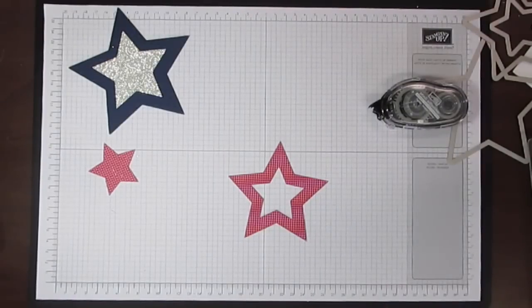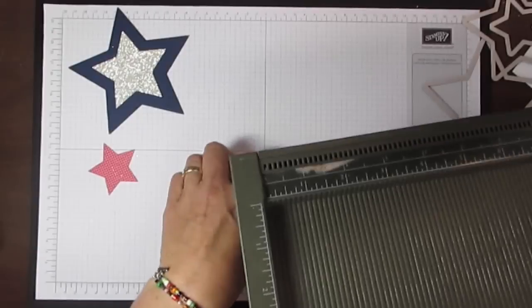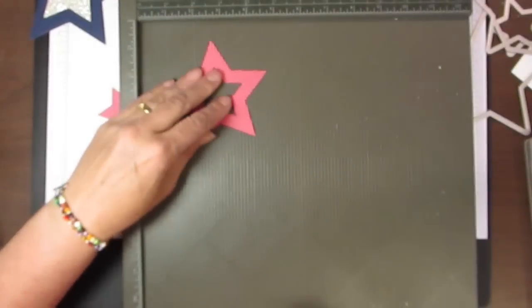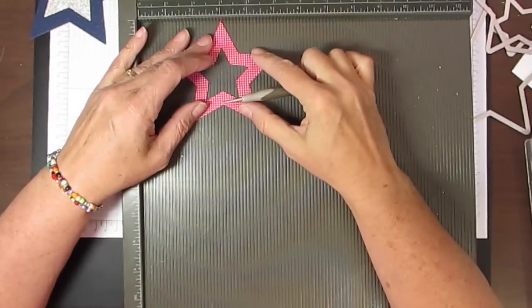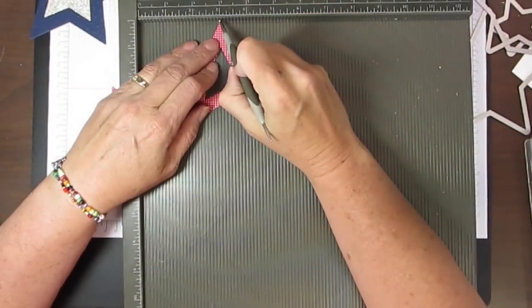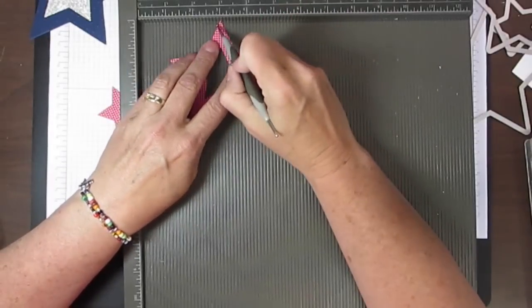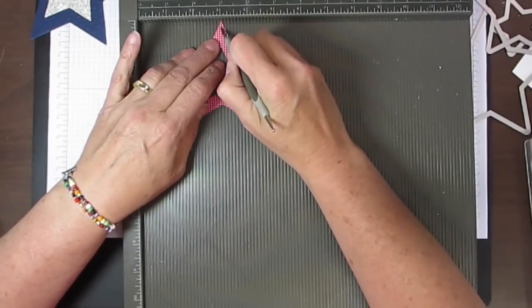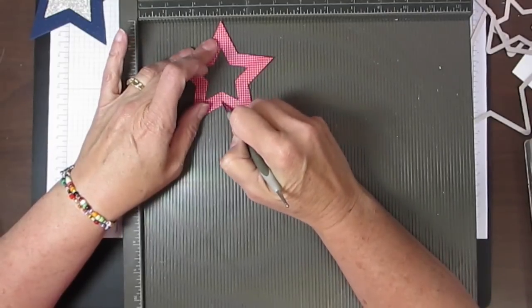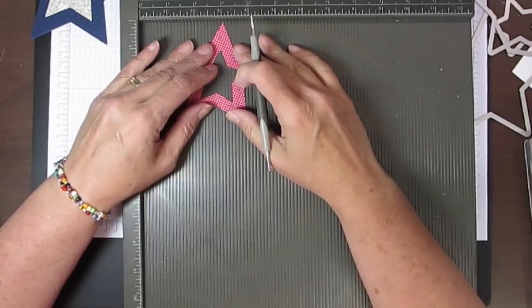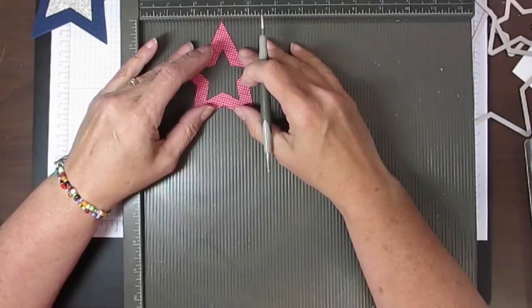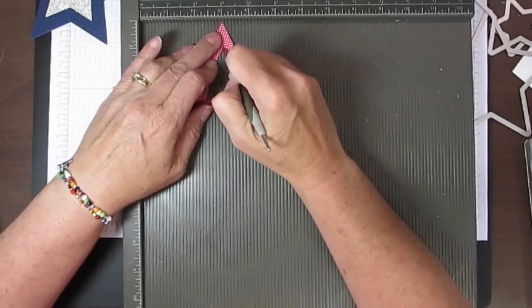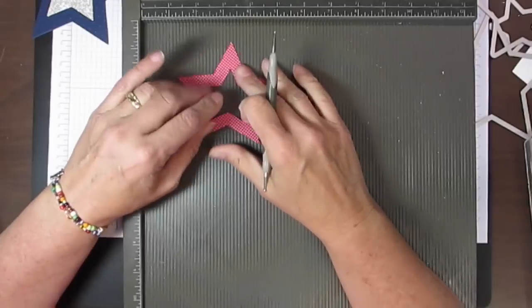My Simply Scored. I'm going to bring in my Simply Scored and I'm just going to line this up. I'm actually just lining the point of this star up at the 3-inch mark and scoring there and down here. I'm just going to turn it and do that five times for each point at the top and the bottom.